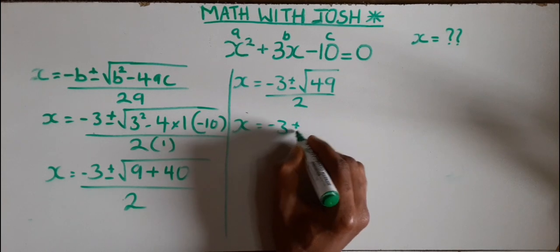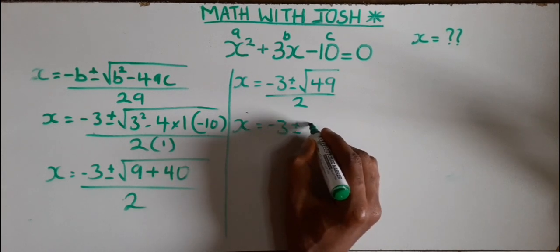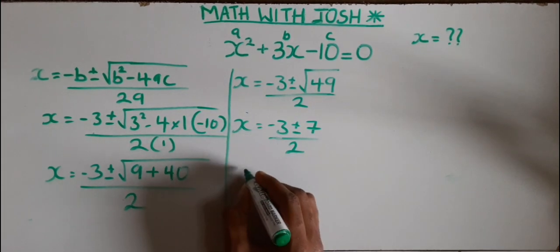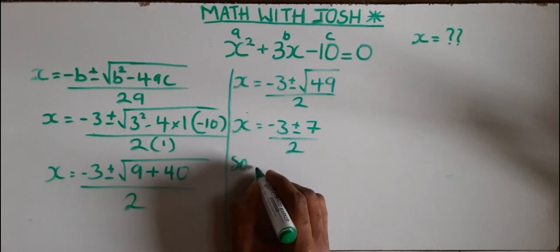Now x equals minus 3, the square root of 49 is 7, so from here now x is either...